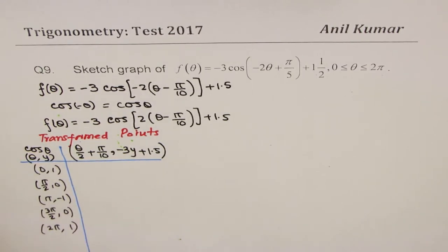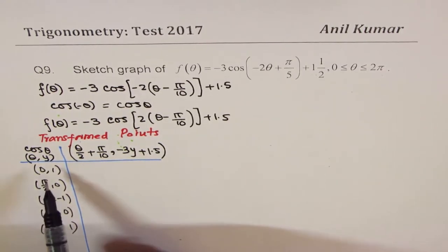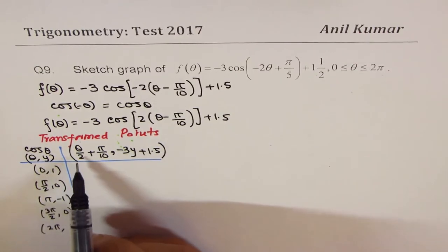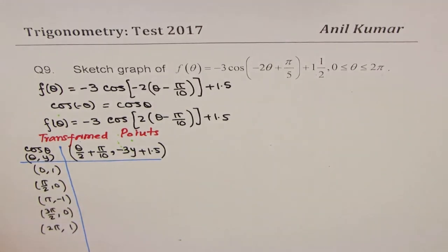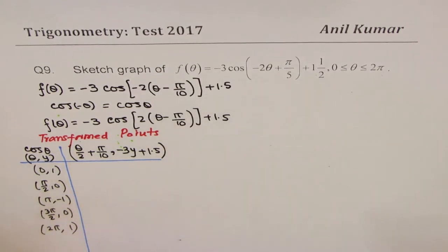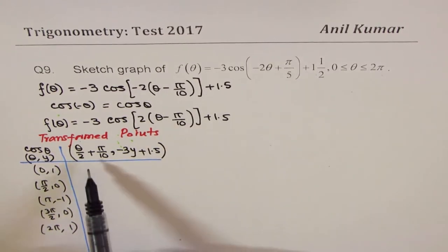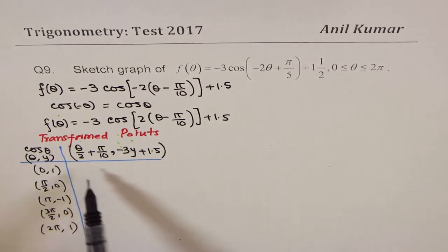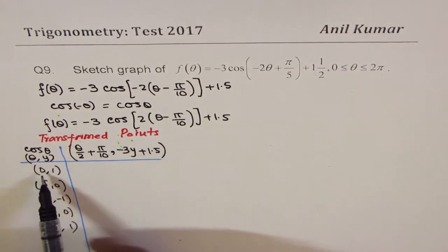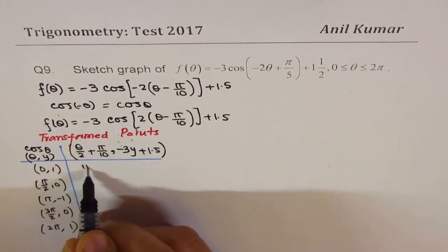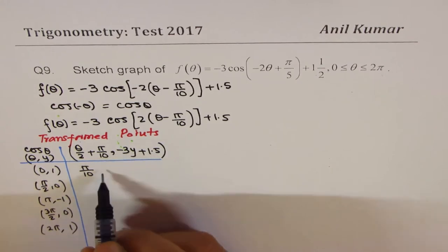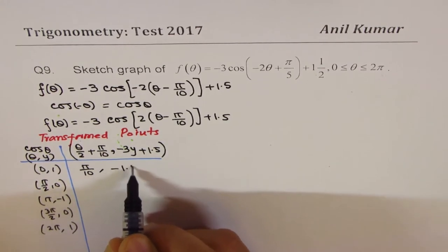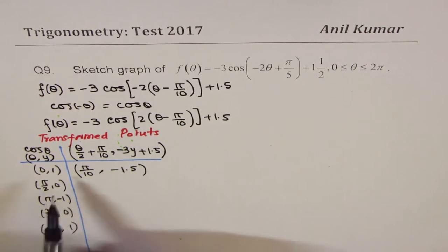For some students this calculation can be challenging, so let me show how to calculate. For θ = 0, simply put in 0 and you get π/10. For the y-value, -3 × 1 + 1.5 gives -1.5. So the first image point is (π/10, -1.5).